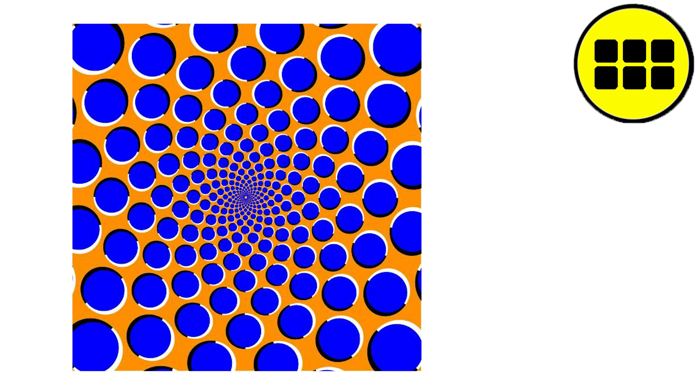When you look at the intersections of these gaps, it appears that gray spots or dots appear on them. However, when you focus on a specific spot, the spots disappear.